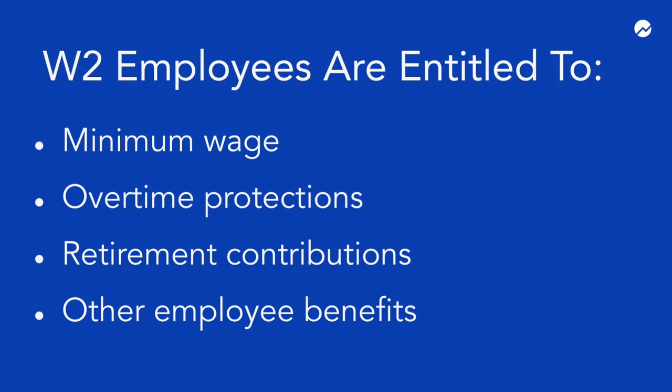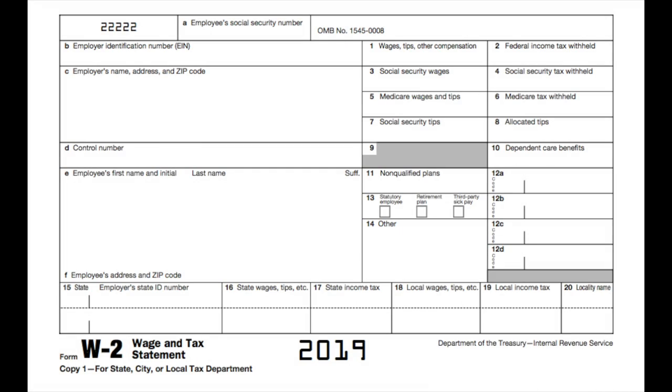A W2 employee is a regular staff employee who's entitled to minimum wage, overtime protections, retirement contributions, and other employee benefits. By January 31st of each year, you'll need to send your W2 employees a W2 form, which shows their annual wages, and they'll then use that form to file their taxes. The W2 form will also show any deductions that you've made from that employee's paychecks throughout the year.